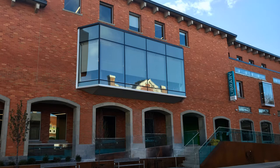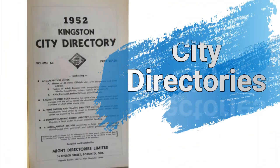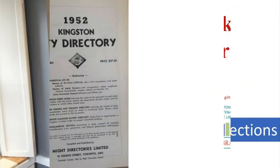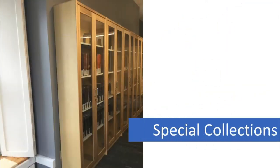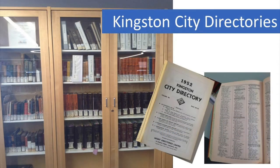One of the most heavily used collections in the Local History Room is the set of Kingston City directories. The directories cover the years 1855 to 2001. They're kept in the glass Special Collections cabinet along the Johnson Street wall. Staff will be happy to unlock the cabinet for you. To learn more about Special Collections, check out Quick Tour number one.